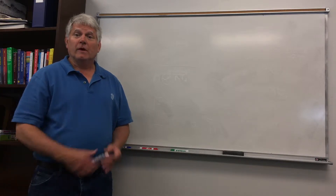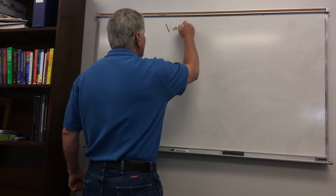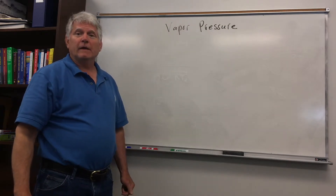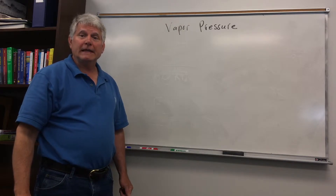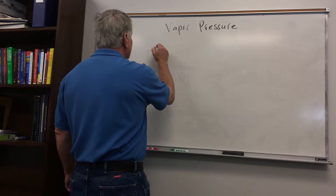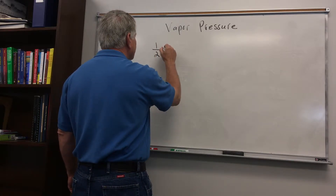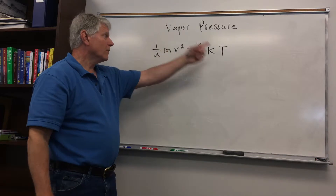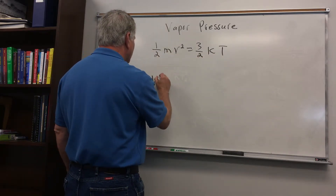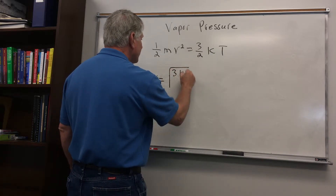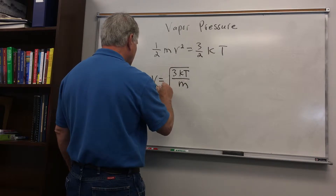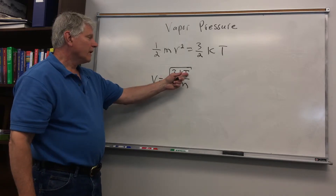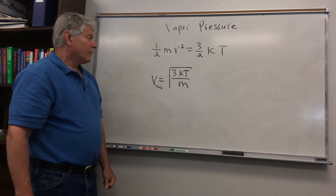Let's consider the vapor pressure of a liquid. We learned from Chemistry 1 that we can determine the average speed of a gas particle. If we take the kinetic energy equation written in terms of speed and in terms of temperature, we can solve for the root mean square speed of a gas particle. We see that as the temperature goes up, the average speed of the particle goes up.